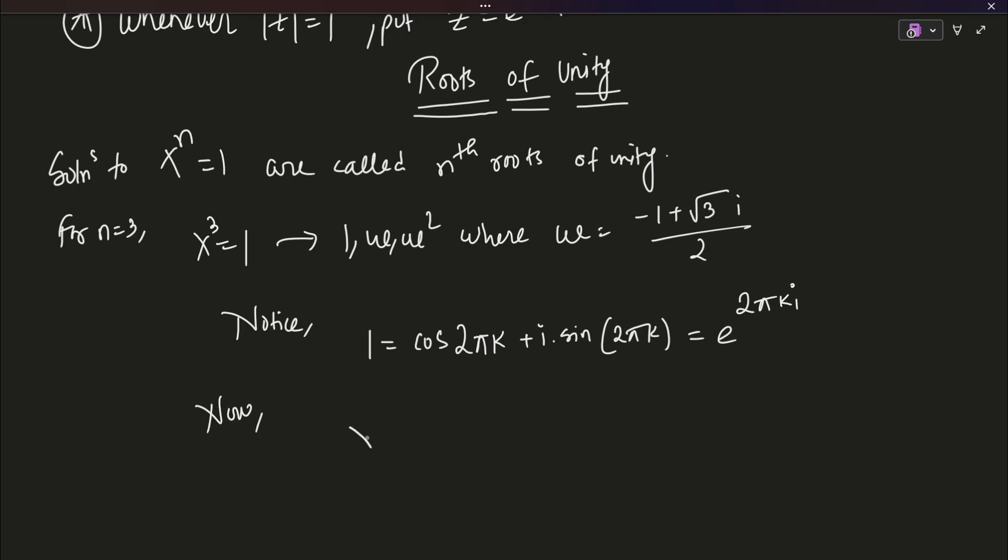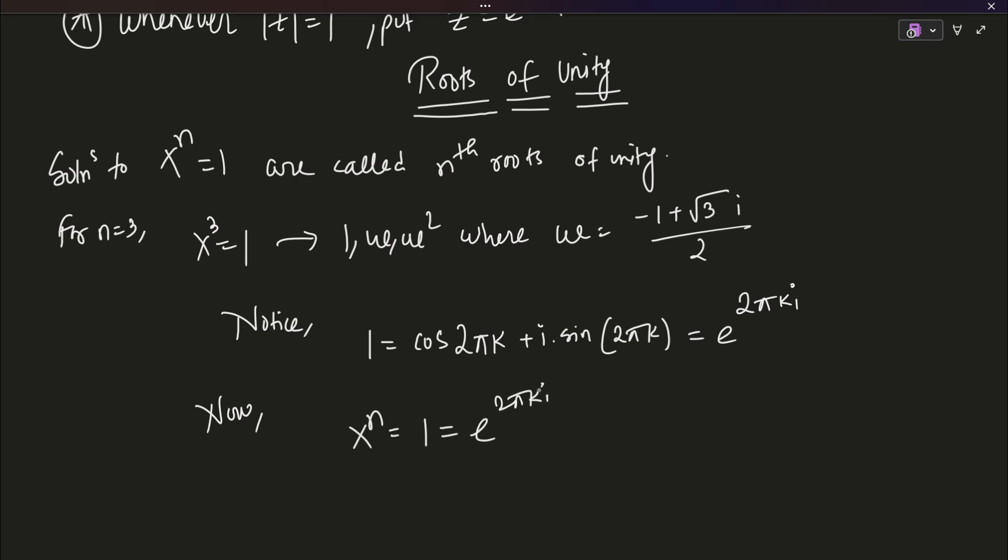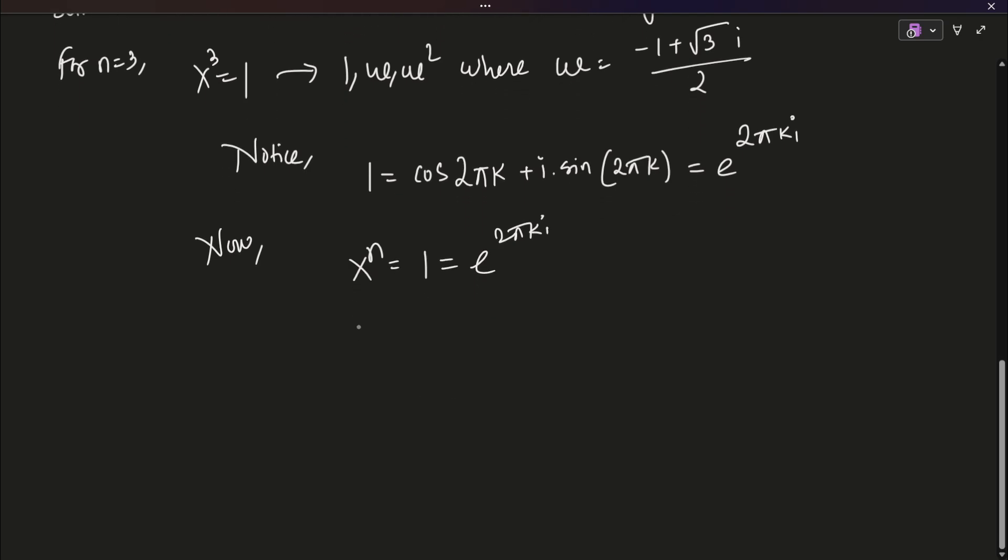Now, therefore, what we can do is x to the power n is equals to 1 is equals to e to the power 2 pi k i. And, therefore, now taking the nth root on both sides, we can do that because we have complex number on both sides now. And, we do not really need to be aware of negative roots or something like that because it's complex numbers. Everything is allowed here.